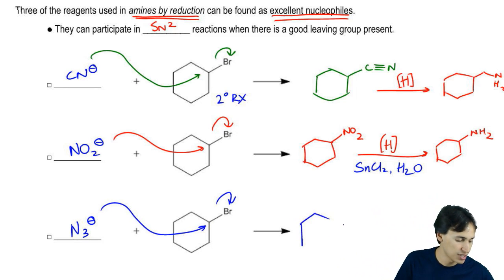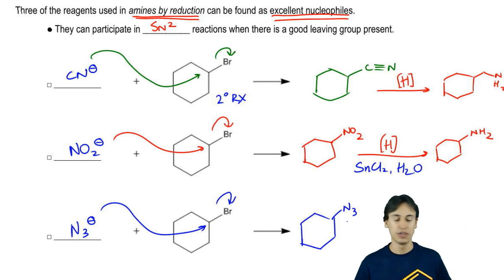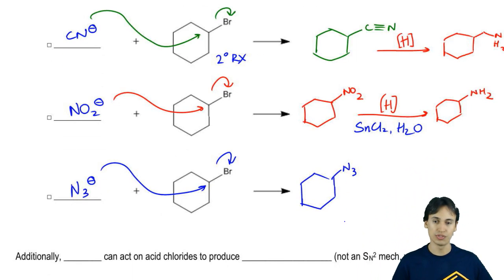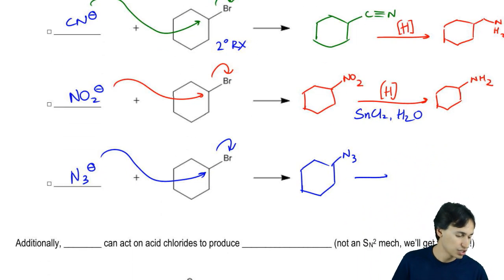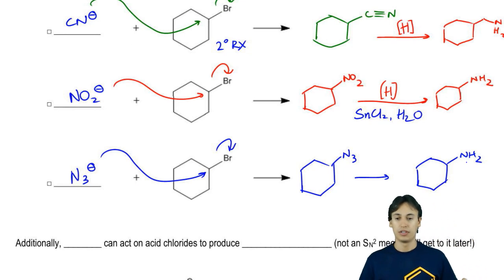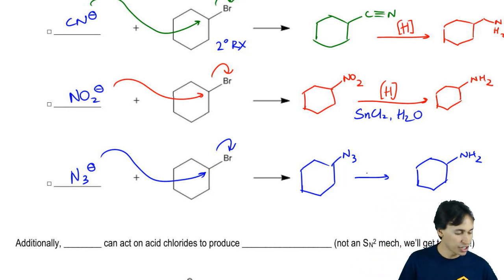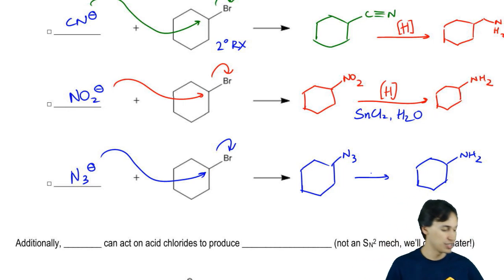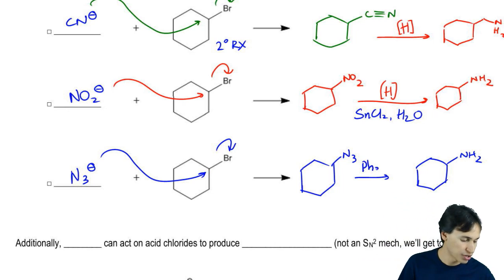What that would give us is a compound that looks like this, N3. Now what reagents could we use on N3 to turn it into a primary amine? And the answer, this one's a little bit weird. We can't use the common reducing agents. We would have to use your triphenylphosphine and water.